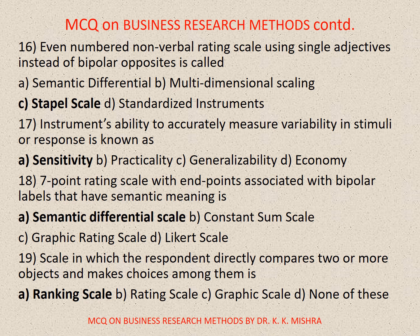Question number seventeen. Instrument's ability to accurately measure variability in stimuli or response is known as. Options are: A. Sensitivity, B. Practicality, C. Generalizability, D. Economy. Correct option is A. Sensitivity.